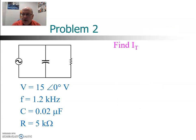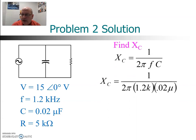Let's try that again with a different problem. Same circuit but different values. We're going to find total current again. So first of all find that X of C, 1 over 2 pi, 1.2k and 0.02 micro, you'll get 6.63 kiloohms.